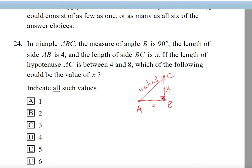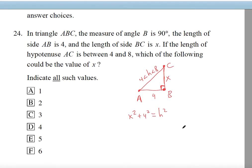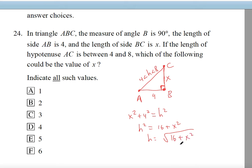This is a right triangle so we can use the Pythagorean theorem. X squared plus 4 squared equals H squared. So H equals the square root of 16 plus X squared. The hypotenuse is a function of X, so we plug in each X value to check if the hypotenuse constraint is satisfied.